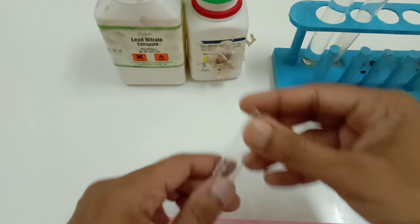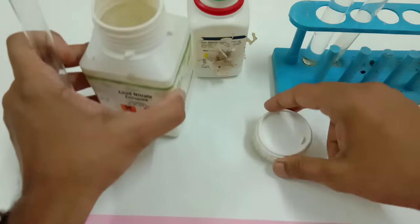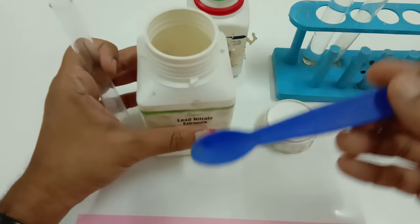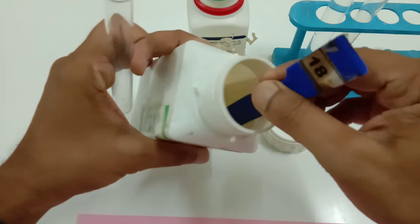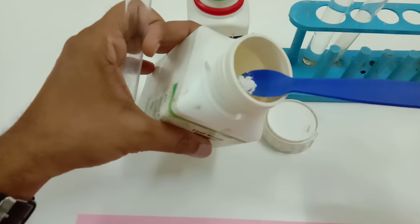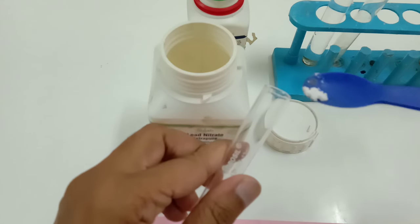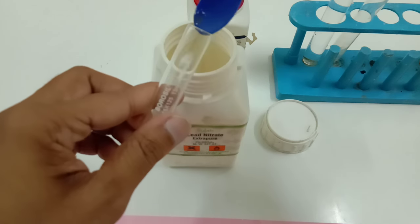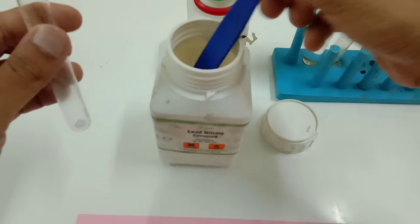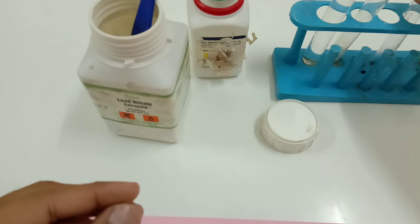First of all, I am going to take some lead nitrate, that is Pb(NO3)2, a very small pinch of it, and I am going to place it over here.